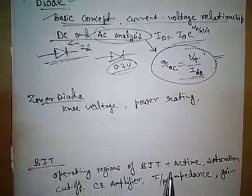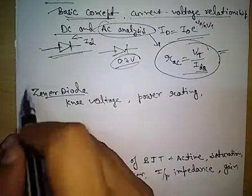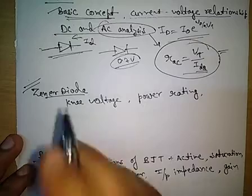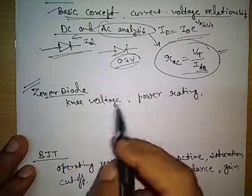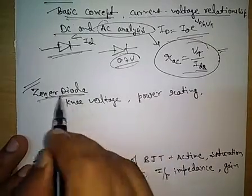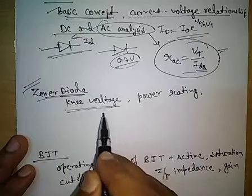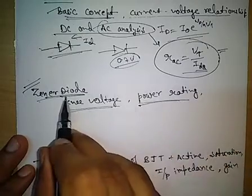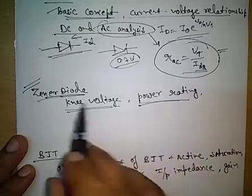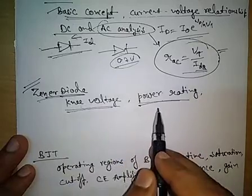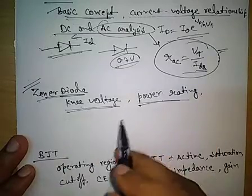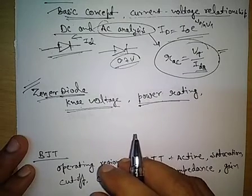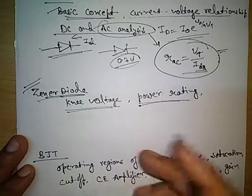The next important topic is the Zener diode, which is very popular and frequently asked in the GATE exam. The key concerns for this topic are the knee voltage or knee current, and the power rating of the Zener diode. You must prepare questions on both of these and try to solve as many problems as possible, since this topic has been frequently asked in previous GATE exams.